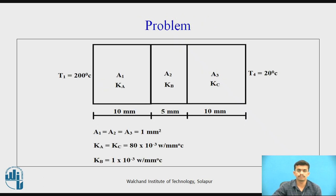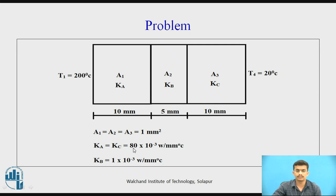We are going to solve this problem. There are three walls: the first wall has a length of 10 mm, the second wall is 5 mm, and the third wall is 10 mm. The temperature T1 is 200°C and T4 is 20°C. The areas A1, A2, and A3 are equal to 1 mm². Thermal conductivity Ka and Kc is 80×10⁻³ W/mm·°C, and Kb is 1×10⁻³ W/mm·°C.